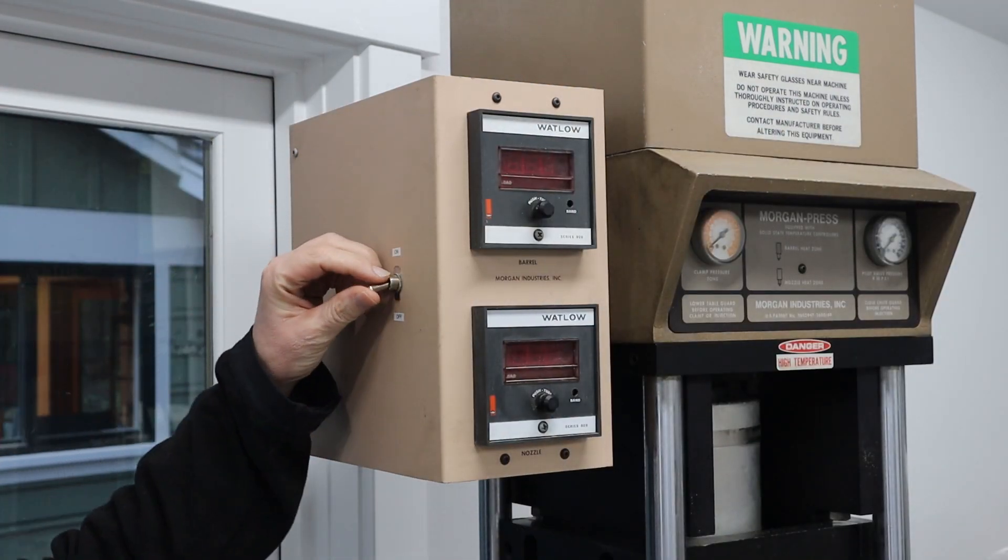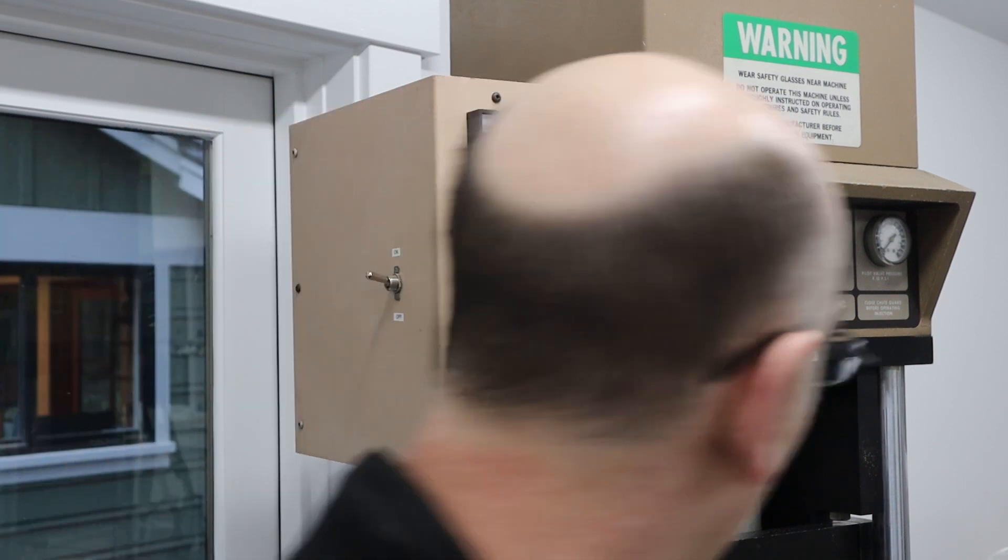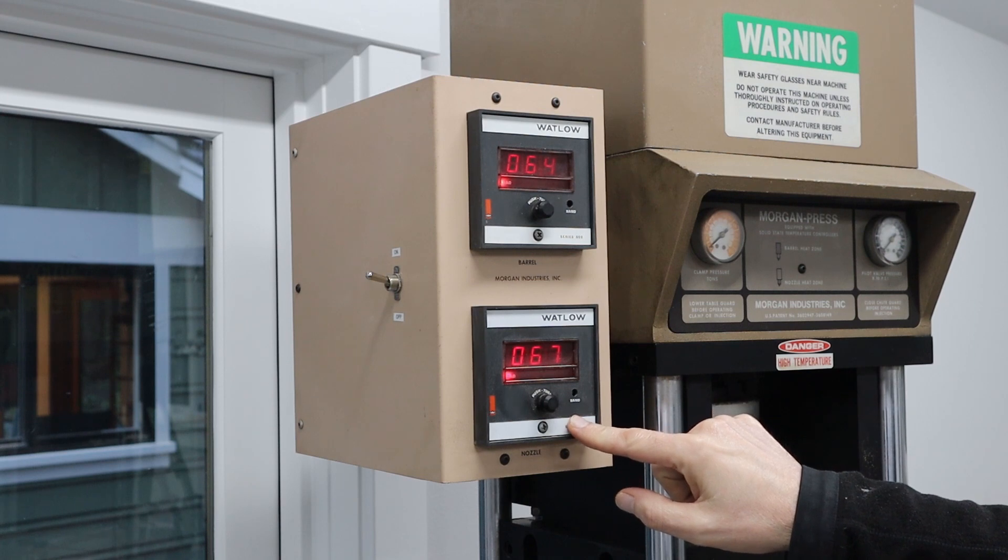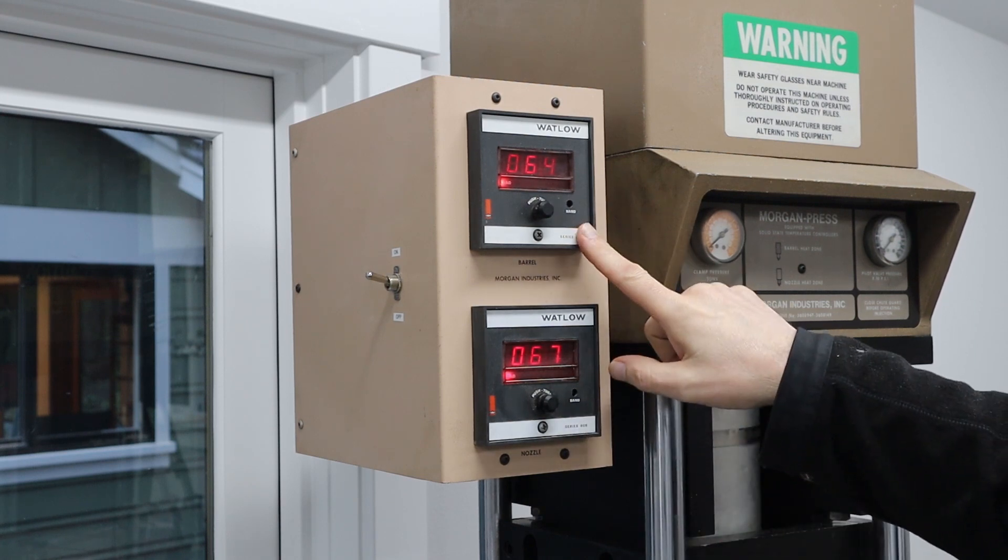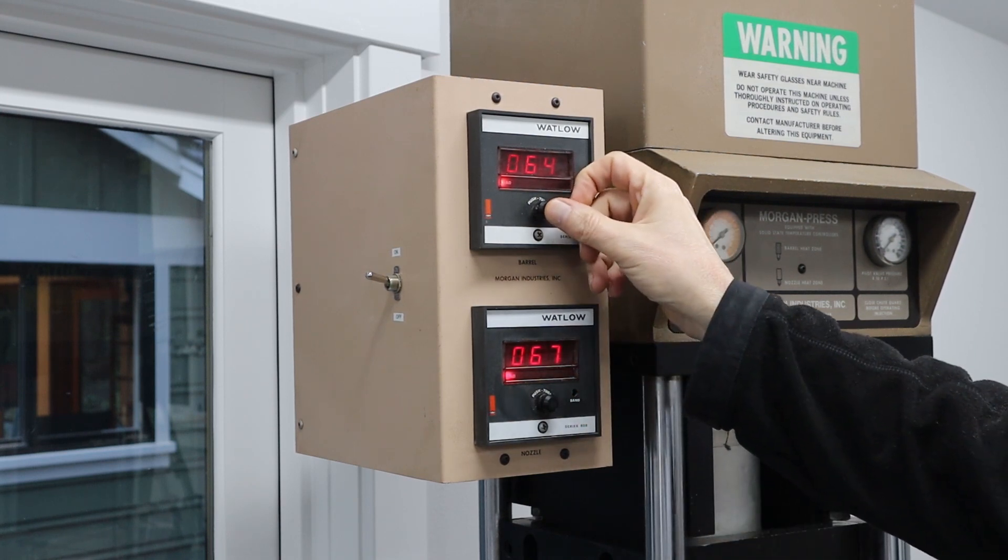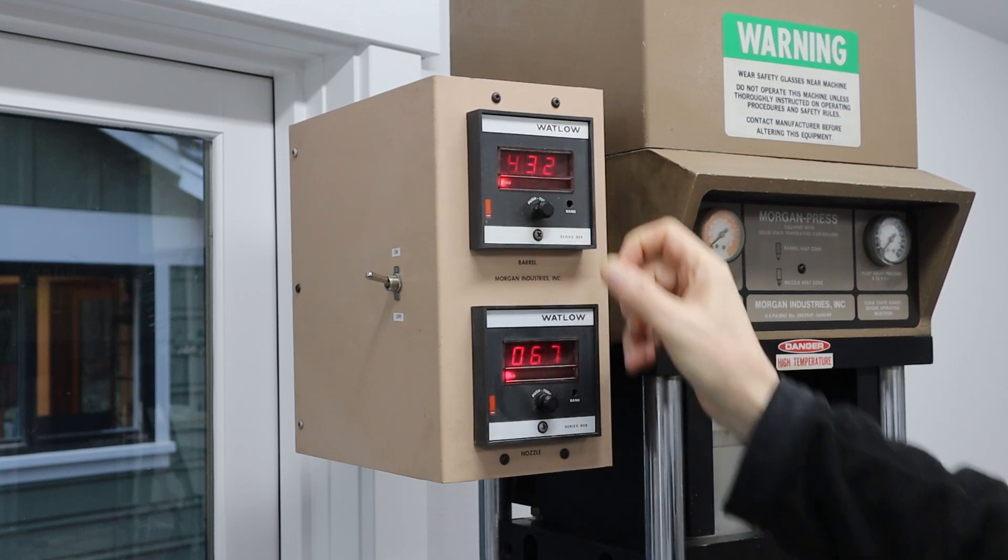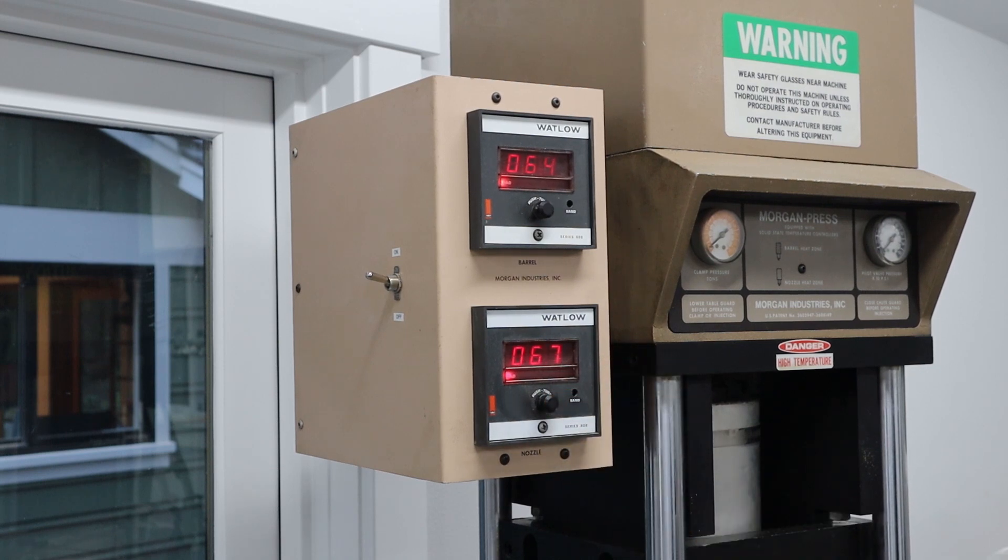It's on the side. Okay, so I'm going to turn it on. And you can see that we've got the two heaters. This is the barrel heater and this is the nozzle here. Okay, so it's saying the target is 432 for that. 432 for that, so that looks good.